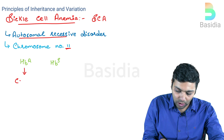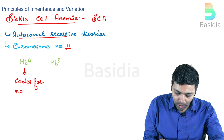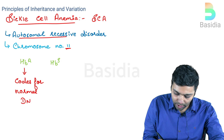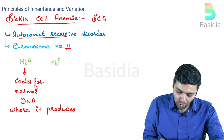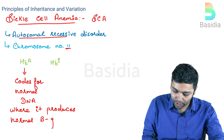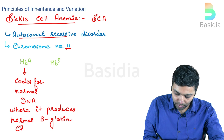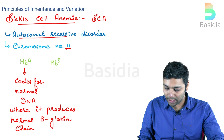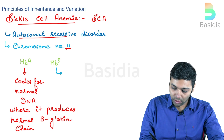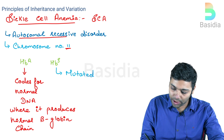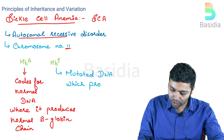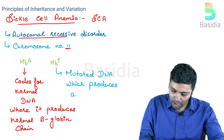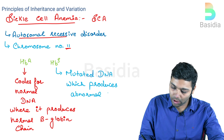HbA codes for normal DNA, where it produces a normal beta globin chain. While HbS is the result of a mutation — a mutated DNA — which produces an abnormal beta globin chain.